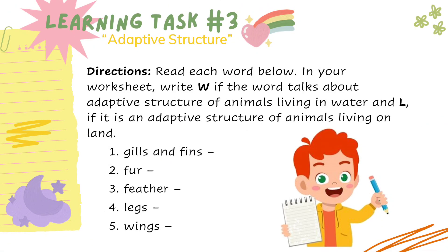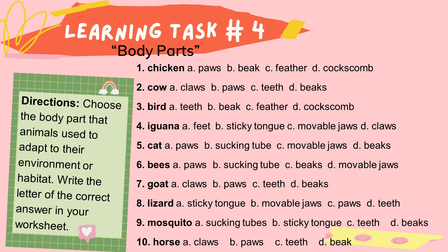Well done, kids — you really did well on answering the activity! Let's do Learning Task Number Three: Adaptive Structures. Read each word below in your worksheet. Write W if the word talks about the adaptive structure of animals living in water, and L if it is an adaptive structure of animals living on land. Then for Learning Task Number Four: Body Parts — choose the body part that animals use to adapt to their environment or habitat, and encircle the letter of the correct answer in your worksheet.